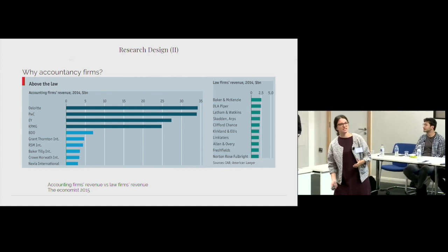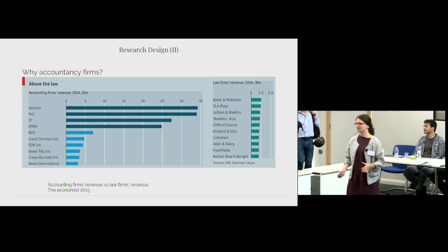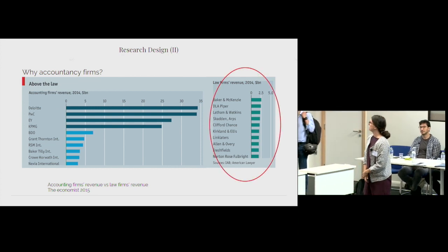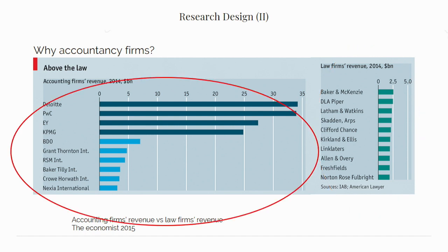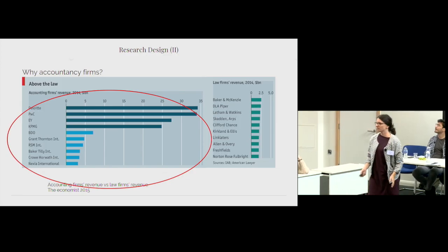Another point why it's interesting to look at the accountancy firms is their sheer size. You see these statistics from The Economist from 2015. On the right-hand side, you see the revenue of law firms in 2014. And on the left side, you see the revenue of accountancy firms. And the scale is the same. So you see the difference.